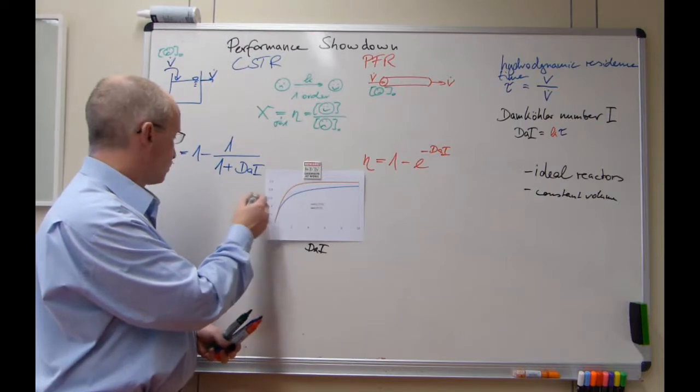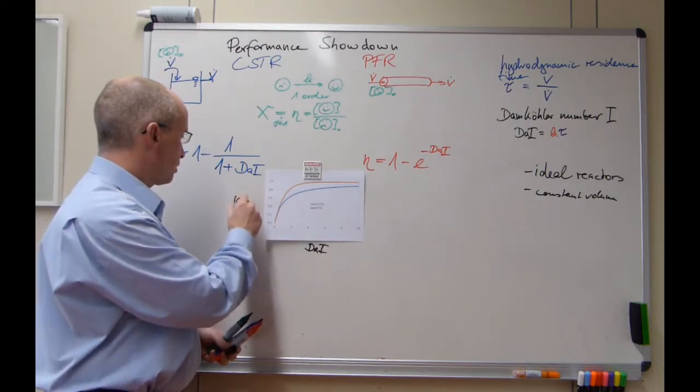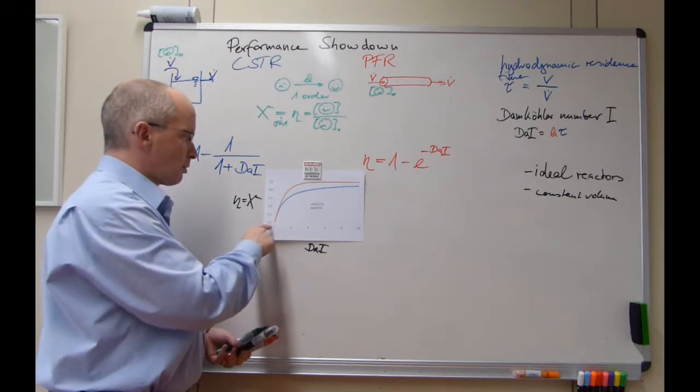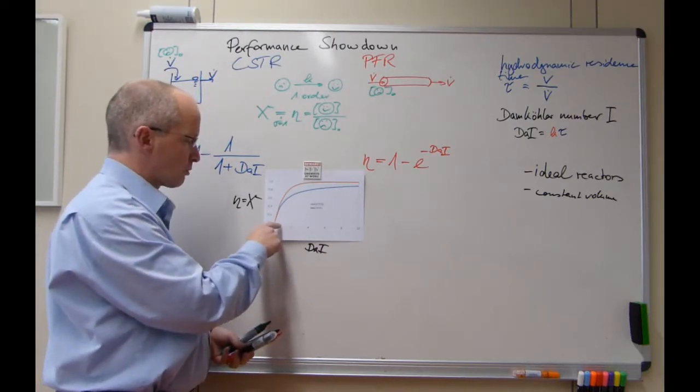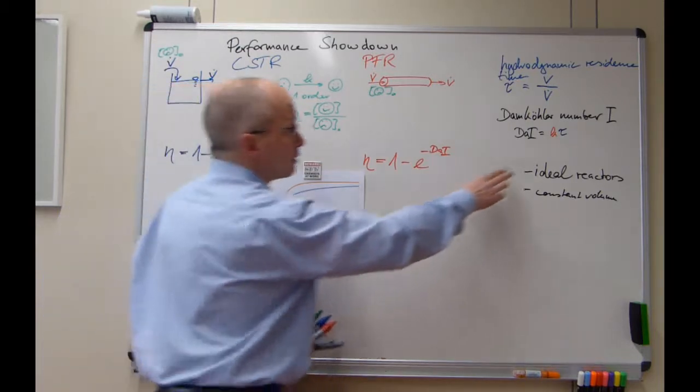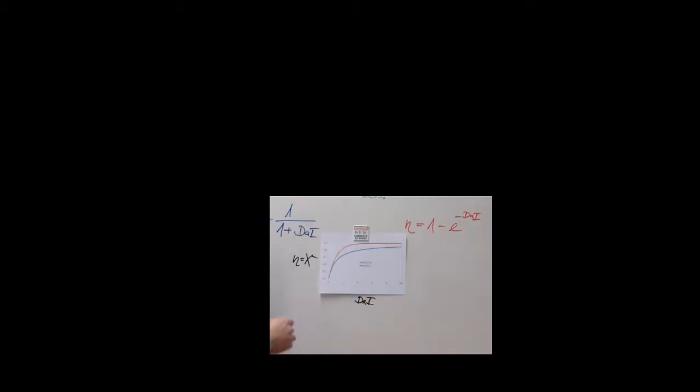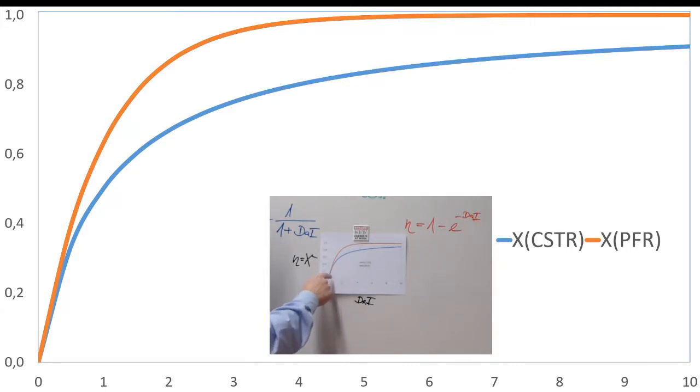And here we have conversion or yield, which is the same here, for both reactors. What you can see is that the reaction is either getting larger because the reaction is getting faster, or you give it more time, or both. If no reaction, of course, there is nothing happening at all. Then they rise rather quickly here. You see also that in view of conversion, in view of pure happiness, the PFR actually outperforms the CSTR.